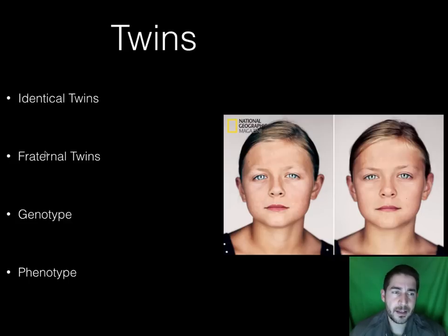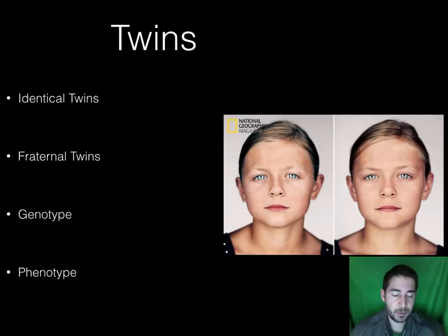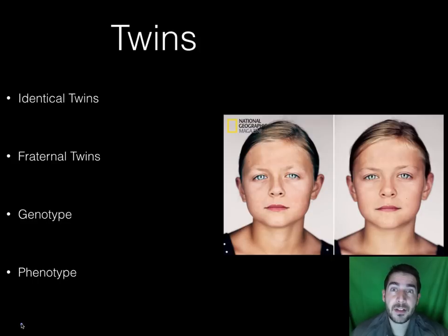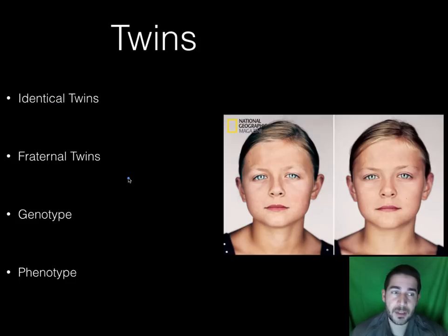Next we look at twins. When we talk about behavior geneticists and how genetics affects behavior, the best way to figure that out is to look at twins. There are two types of twins: identical twins and fraternal twins.